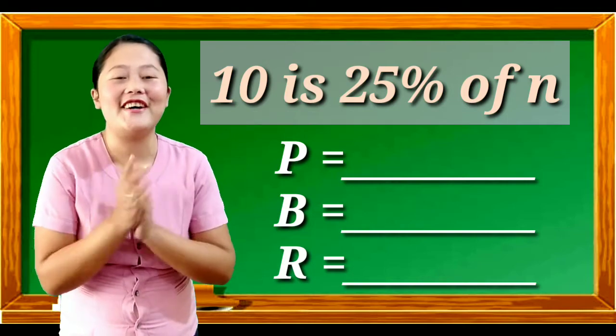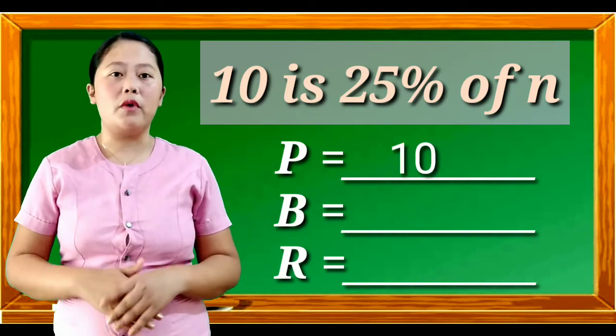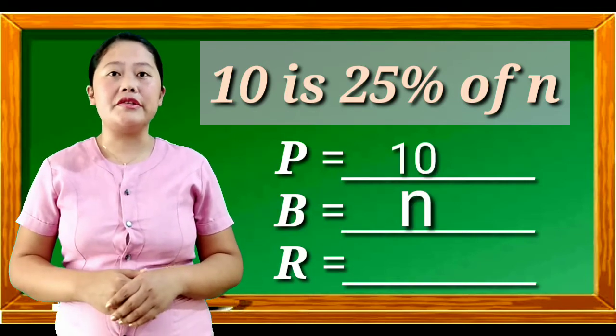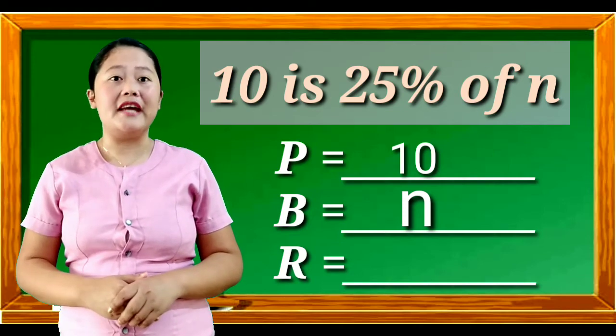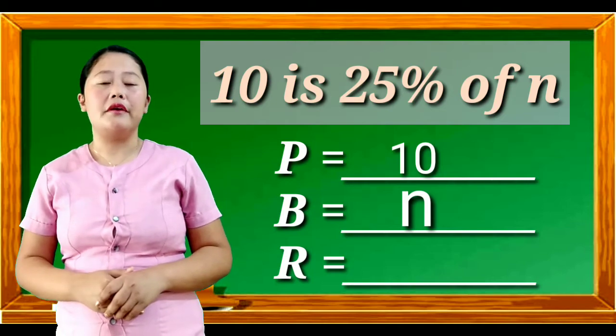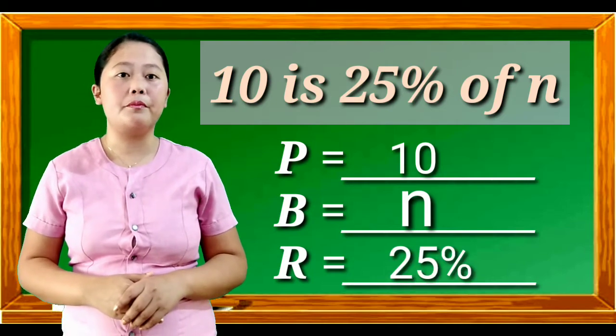Congratulations! 10 is our percentage. N is our base. And remember, N is unknown in this equation and needs to be solved. And our rate is 25%. Let's have the second equation.